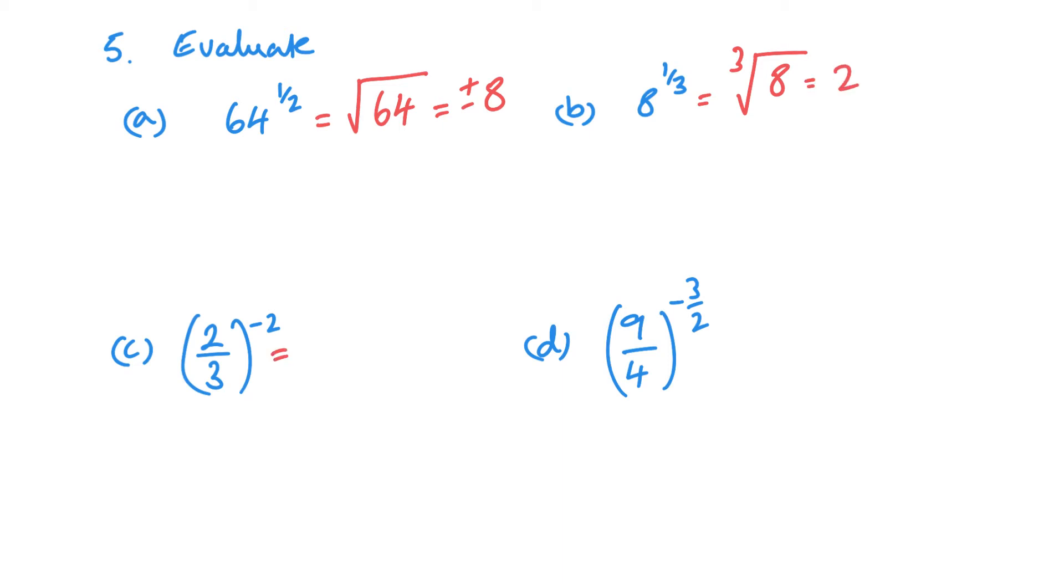Now, when I've got a negative power, what I want to do here is first change it to a positive power. So I can do that by essentially looking at the inverse of this fraction. So this is going to become 3 over 2 squared, which is 9 over 4.